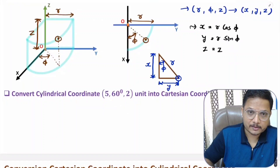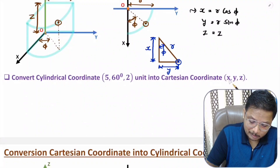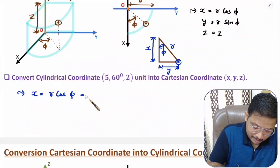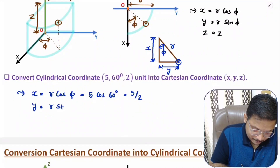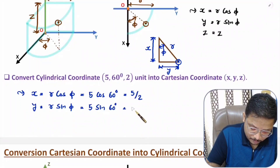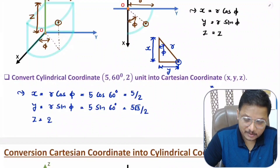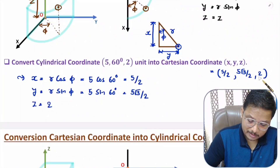Now let us solve one problem based on it. We need to convert a cylindrical coordinate into Cartesian coordinate. To calculate x, the formula is x = r cos phi. Here r is given as 5 and angle is 60 degrees — cos 60 is one half, so x is 5/2. And y = r sin phi, where r is 5 and angle is 60 degrees — sin 60 is √3/2, so y is 5√3/2. And z is the same for both, so z is 2. So the Cartesian coordinates are 5/2, 5√3/2, and 2.